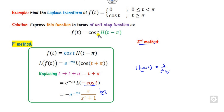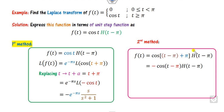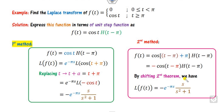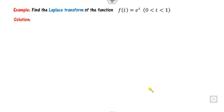Second method for the same example: express t in terms of t − π by subtracting and adding π, writing cos((t − π) + π). Using the identity cos(x + π) = −cos(x), this becomes −cos(t − π). Now both arguments match, so by the second shifting theorem: L{−cos(t − π)·h(t − π)} = −e^{−πs}·L{cos(t)} = −e^{−πs}·s/(s² + 1). Both methods give the same answer.